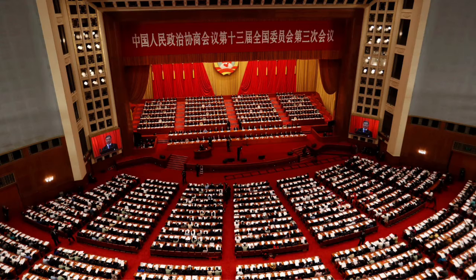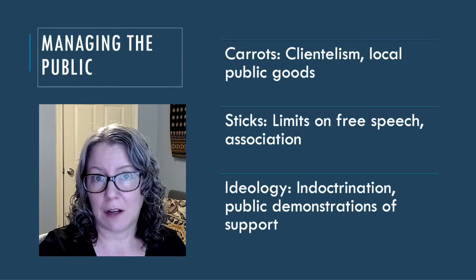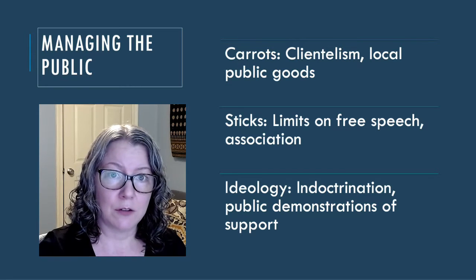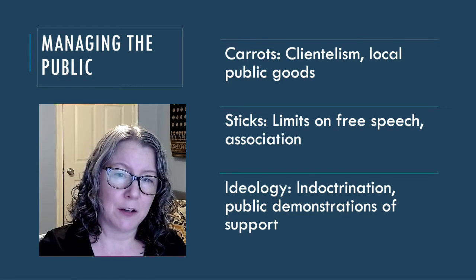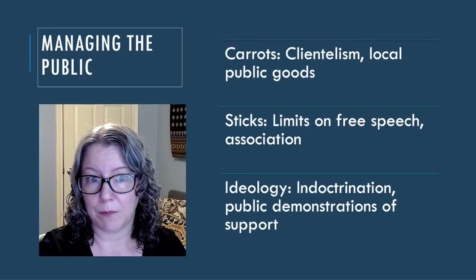For example, in China, the Communist Party provides ambitious politicians a path to become a member of the elite. Party members recruit rising stars and promote those who are either the most effective at their jobs or the most loyal. Finally, while dictators do not come to power through public support in elections, they do need to keep a degree of public support — or at least compliance — to maintain power.